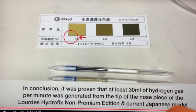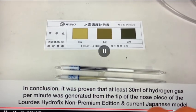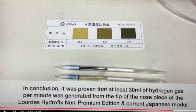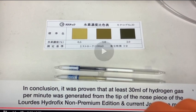30 milliliters of hydrogen gas per minute was generated from the tip of the nose of the Lourdes Hydrofix non-premium edition, which is the current Japanese model. So you can really see clearly the color difference and seeing that this method is accurate.